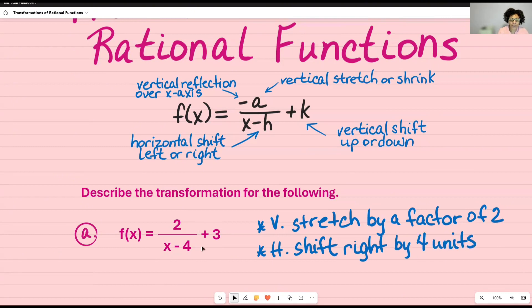And then over here, this is my k and k tells me that I'm going to have a vertical shift up or down. And it's going to be up because there's a plus sign. So up 3 units.